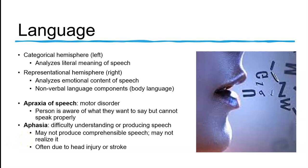Apraxia of speech is a motor disorder where you know exactly what you want to say but you can't say it — this is what we call word salad. For example, I may want to tell you that my dog's name is Cooper, but instead I say something like 'yellow tree hurt my' — that doesn't make sense. Aphasia is when you have difficulty understanding or producing speech; you may not be able to produce comprehensible speech at all and not even realize it.